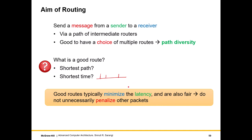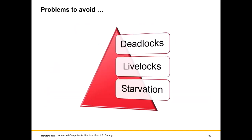Any good route would typically try to minimize the latency and also be fair, in the sense it would try to reduce the span between the times that packets take to as small a value as possible — not to unnecessarily penalize or delay other packets. Any routing algorithm will aim to avoid three problems: deadlocks, livelocks, and starvation.